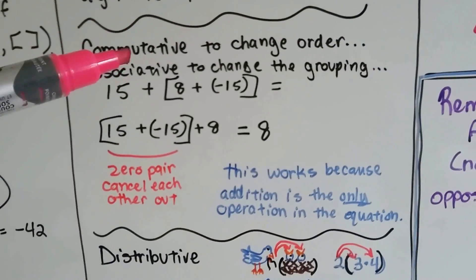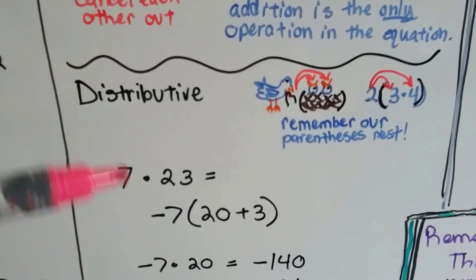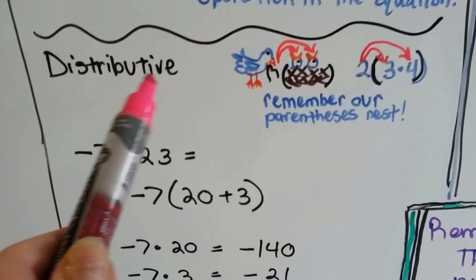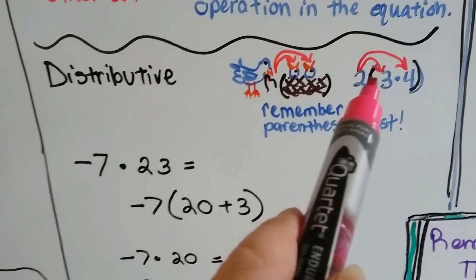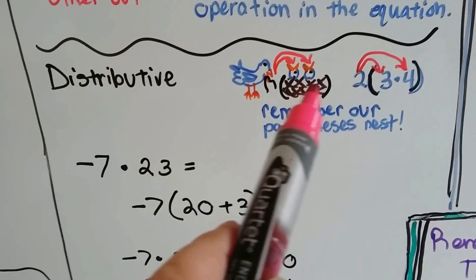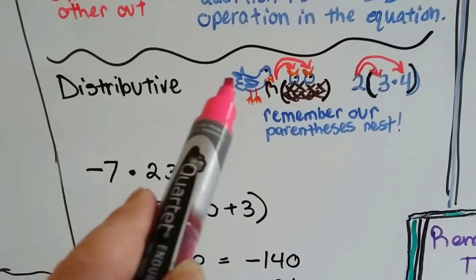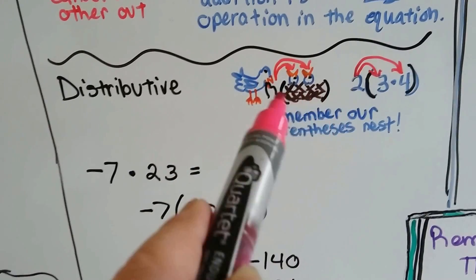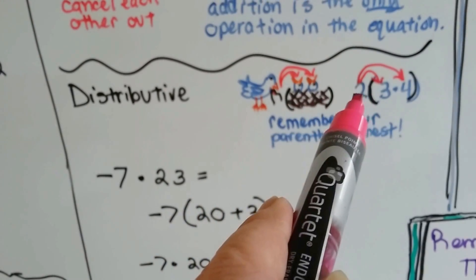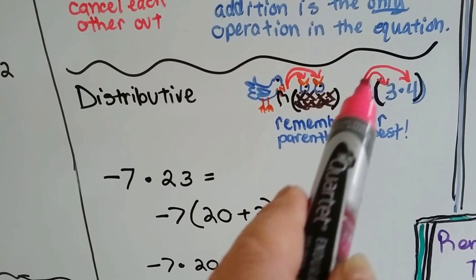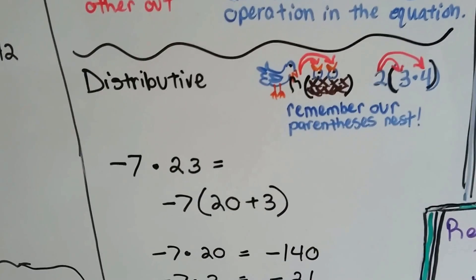So, we used commutative and associative. Well, now we can use distributive also. If you remember my videos on distributive, we have a parentheses nest. And the outside number is like the mother bird feeding her baby birds and she gives each one a turn. It's our parentheses nest. You go 2 times 3 and you add it to 2 times 4.